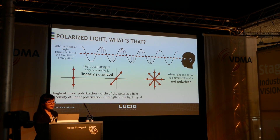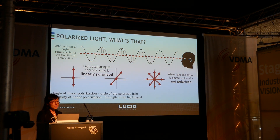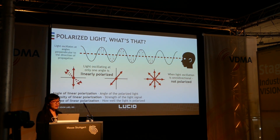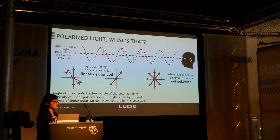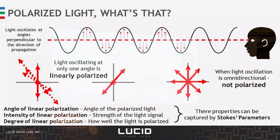Now consider the definition of angle of linear polarization. When the light is linearly polarized, it can take a certain angle. There's also the concept of degree of polarization, which is how well it's polarized in a certain direction. Characteristics such as angle of linear polarization, degree of linear polarization, as well as intensity of light can be captured in a concept called Stokes parameters.